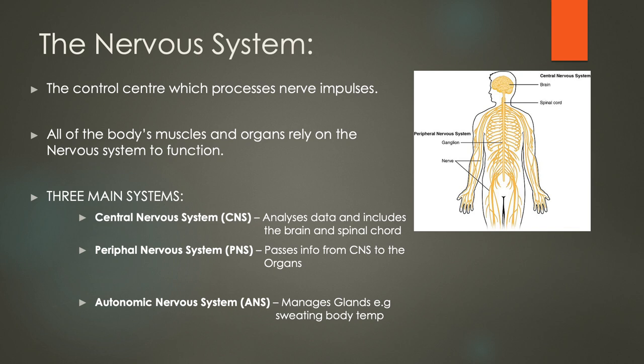The nervous system. Within the human body we have something called a nervous system. It is basically the control centre which processes nerve impulses. The body relies on this nervous system to completely function. There are three main systems within the nervous system. The first is the central nervous system, otherwise known as the CNS, and this analyses the data from the senses all over the body. The physical parts of the CNS are the spinal cord, running down the spine, and also the brain.